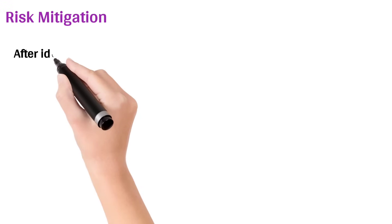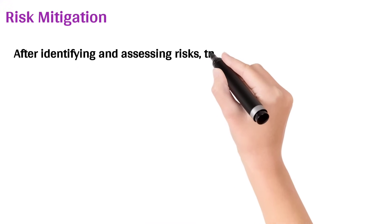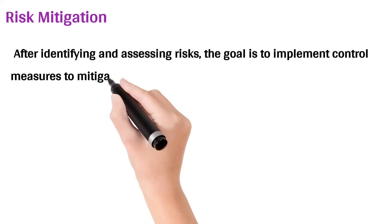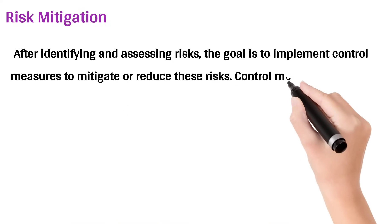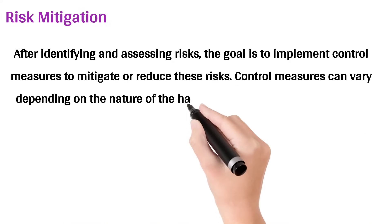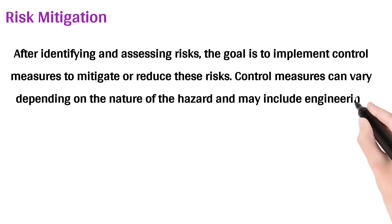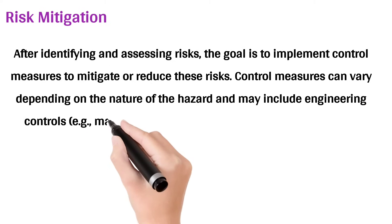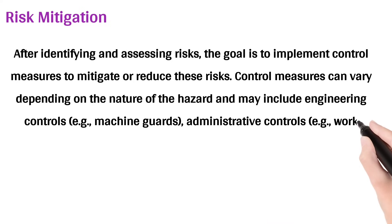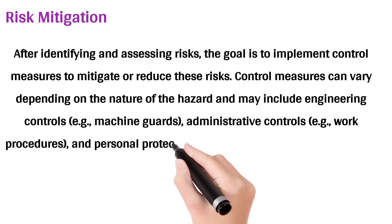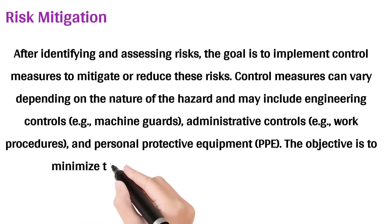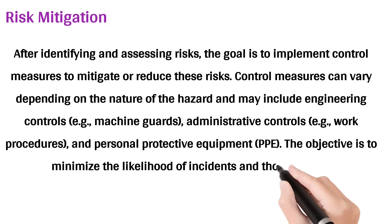Risk Mitigation: After identifying and assessing risks, the goal is to implement control measures to mitigate or reduce these risks. Control measures can vary depending on the nature of the hazard and may include engineering controls (e.g., machine guards), administrative controls (e.g., work procedures), and personal protective equipment (PPE). The objective is to minimize the likelihood of incidents and their severity.